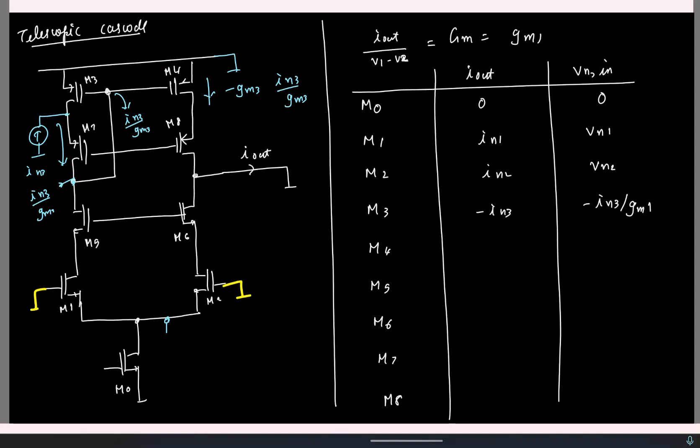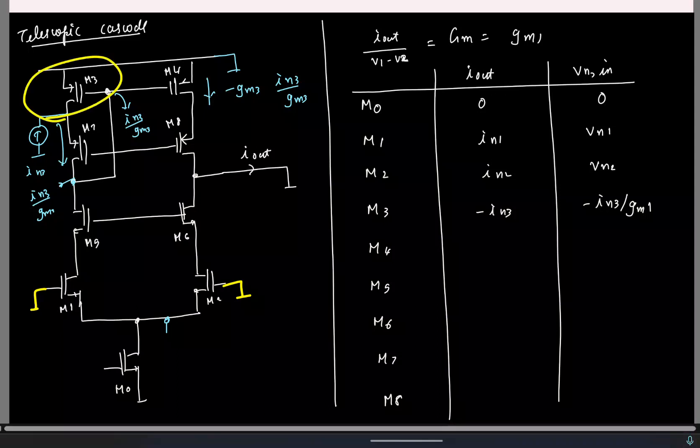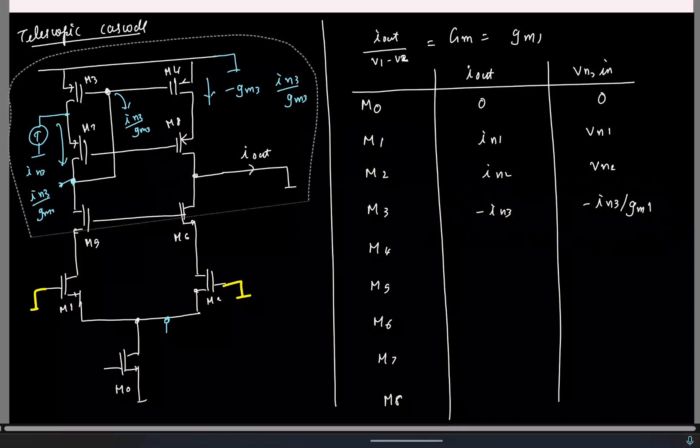So, when we are looking at the noise for the telescopic cascade and especially the noise for this transistor I made a mistake in the explanation, let me clarify it. The end result is still the same, but I made some mistakes in the explanation.